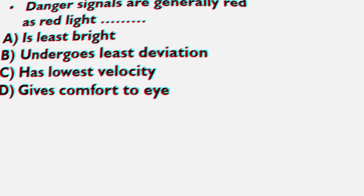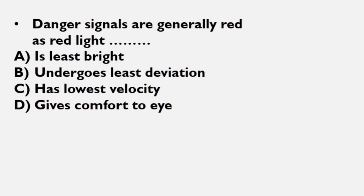Our first question is: Danger signals are generally red as red light... A) Is least bright, B) Undergoes least deviation, C) Has lowest velocity, D) Gives comfort to eye. This is very simple, its answer is undergoes least deviation.